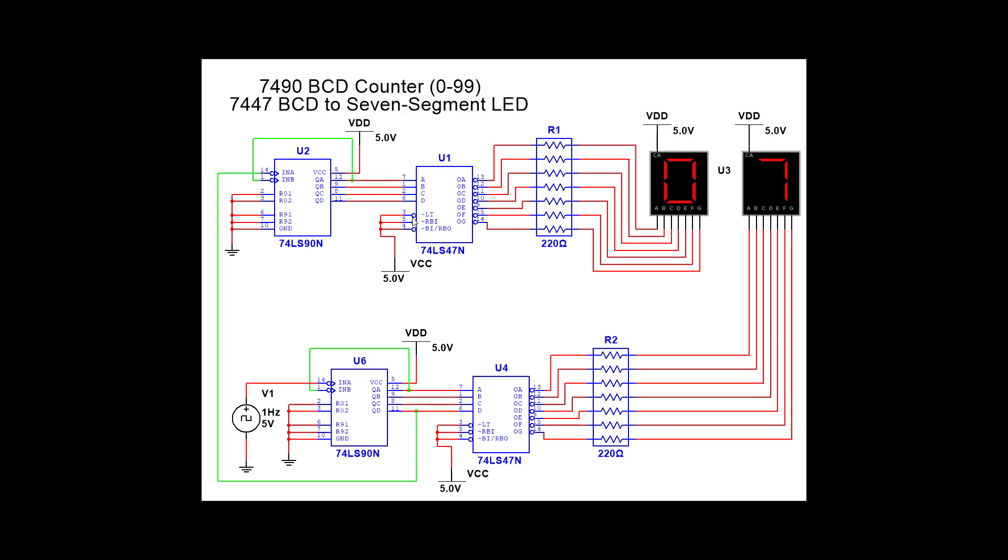Here we have two cascaded 7490 into 7447. The lower one is going to be the least significant digit and this top one's going to be the most significant digit. What we've done is we've allowed this one to count from 0 to 9 and then we've taken the output off of QD and we fed it into the clock of the second counter. And it'll multiply everything by 10 so we're going to get a count of 0 through 99.